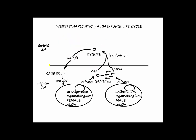What I call the weird haplotic algae fungus life cycle — what's weird about it is that it's different than the animal life cycle. There are multicellular haploid organisms, and the only diploid stage in the life cycle is the zygote. The multicellular haploid organisms form their gametes by mitosis — surprise — which fuse together to form the diploid zygote, which undergoes meiosis to form four haploid cells that develop all by themselves by mitosis to form new multicellular haploid individuals. And those are spores, of course.